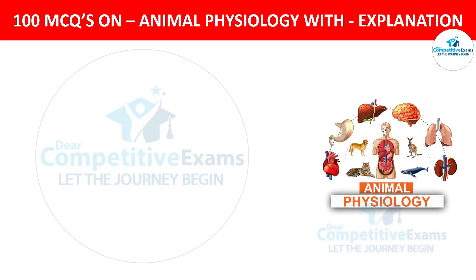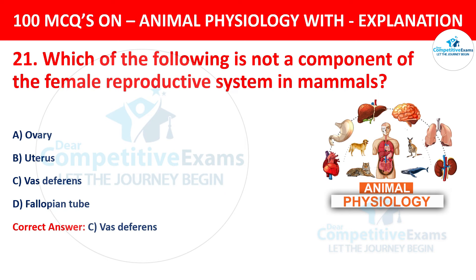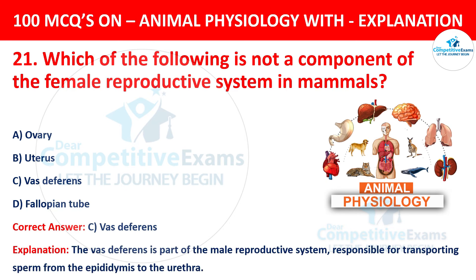Question number 21. Which of the following is not a component of the female reproductive system in mammals? The options are ovary, uterus, vas deferens, or fallopian tube. The correct answer is C, vas deferens. The vas deferens is a part of the male reproductive system responsible for transporting sperm from the epididymis to the urethra.